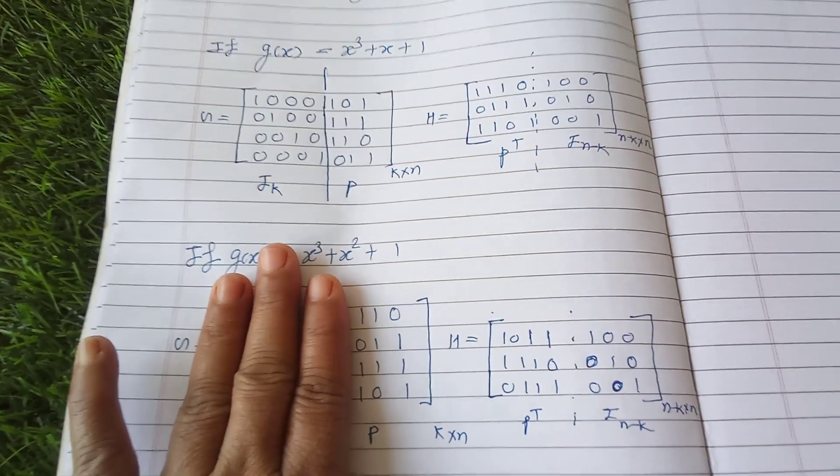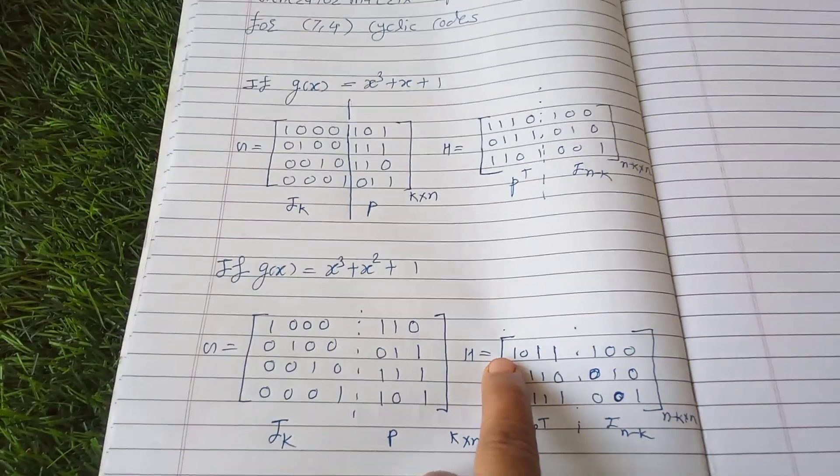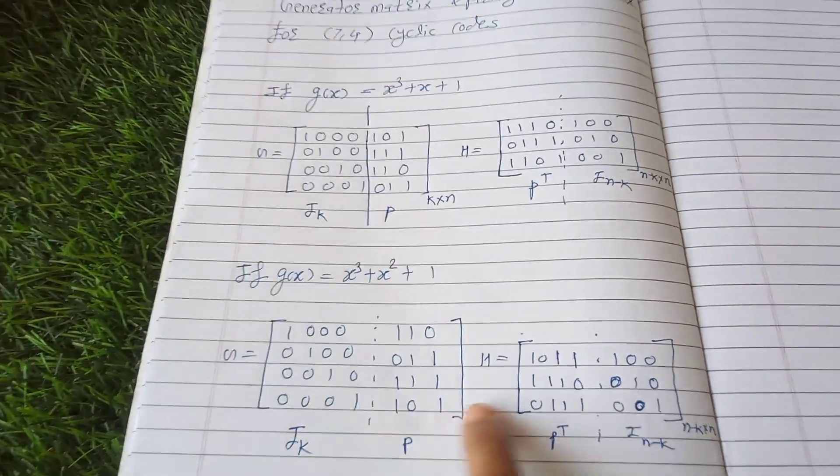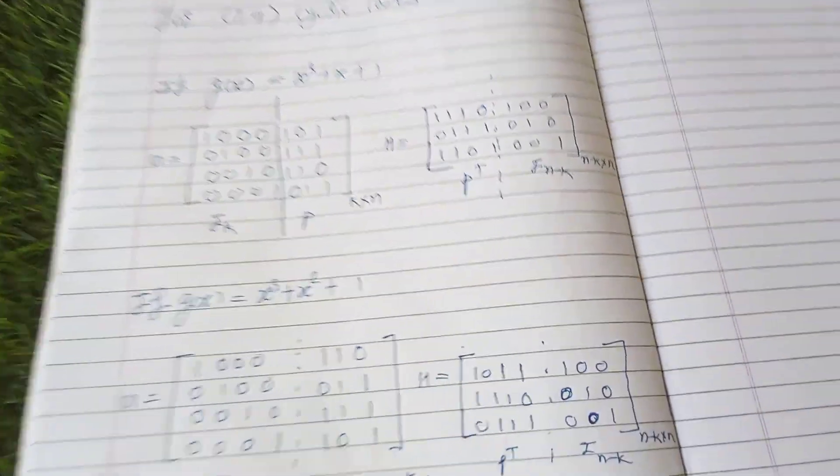After that, P^T - that means this one zero one one row, you have to write it as column. This row and column in this row as third column, likewise.